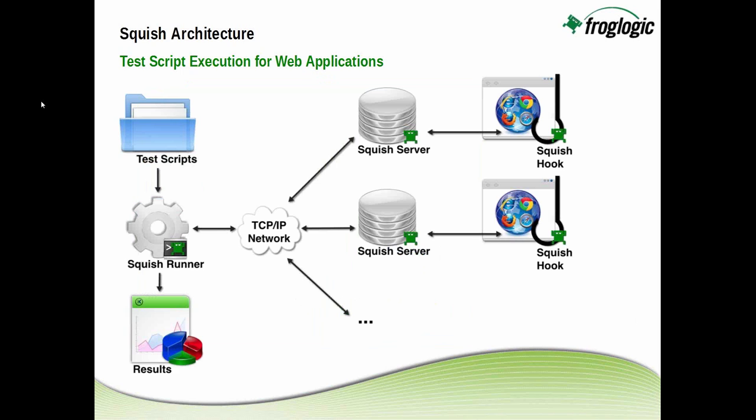When you execute tests, whether from the IDE, from one of our integrations, or from our command line interface, you're using your test scripts — very portable test scripts often stored in a version control system. Those test scripts work with the Squish runner to connect either locally or across the network to one or many Squish server instances, which then interact with your application to execute the tests you created, report the information back, and produce your results.